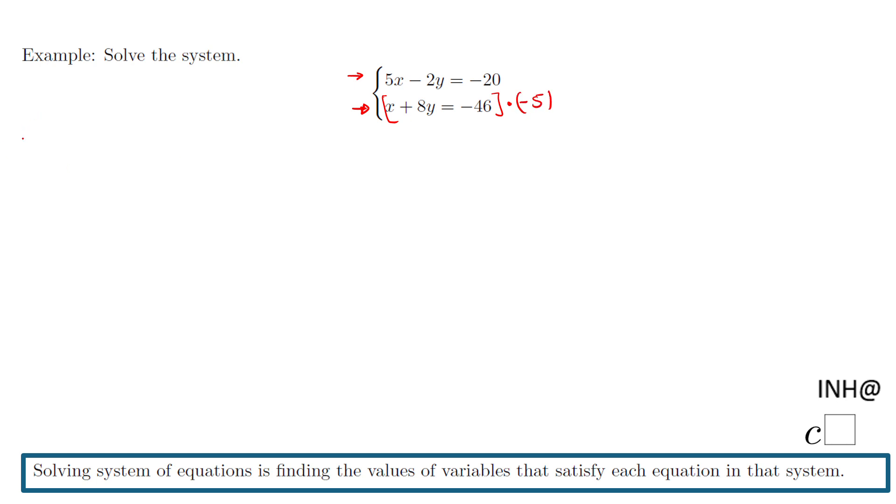We have 5x minus 2y equals negative 20. And then, like I said, we're going to do this multiplication. Negative 5 times x, negative 5x. Negative 5 times 8y, negative 40y. And then we have negative 46 times negative 5. That'll be positive 230.